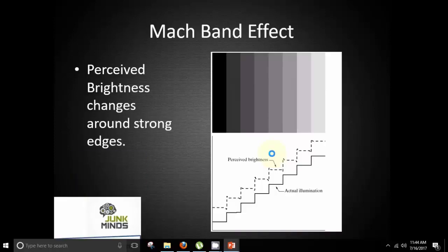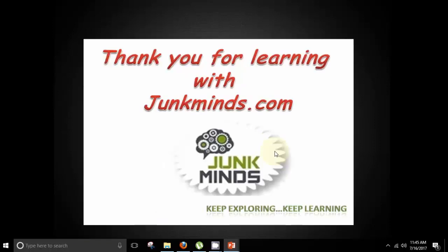The next thing that we have is Mach band effect. Talking about Mach band effect, here you can see there are different shades of grey. What exactly happens in Mach band effect is there is perceived brightness which changes around strong edges. As you can see here this is the actual illumination and the perceived brightness changes at the strong edges. Initially we have a darker shade and as the strong edges keep on occurring the shade becomes comparatively lighter. So this is the Mach band effect. Thank you.